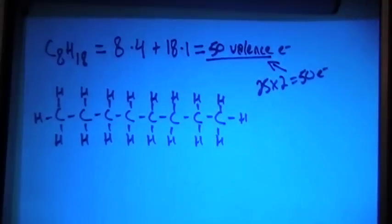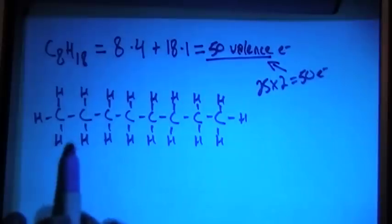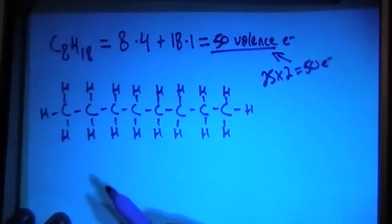So, this should be right. And if you notice, every hydrogen has 2 electrons with a single bond, and every carbon has 4 bonds, which means it has its full octet, 8 electrons. So, this appears to be the right drawing.